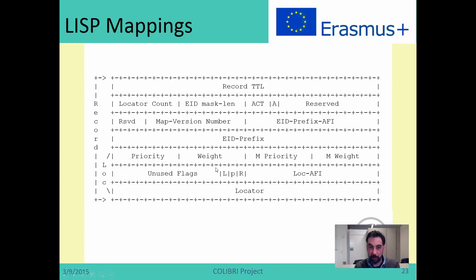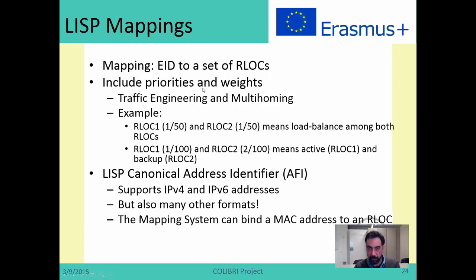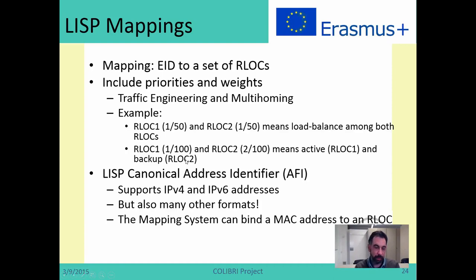The mapping includes the EID prefix and then the set of locators — the locators that are bound to this EID. For each locator you can specify the priority and the weight, for traffic engineering purposes. Finally, you have the locator itself, which is the IP address of the router. For traffic engineering: stating priority 1, weight 50 / priority 1, weight 50 means both locators have the same priority and you want half the traffic on each — this is load balancing. Or you can define priority 1, weight 100 / priority 2, weight 100, meaning you have an active link and if it fails, use the second one as a backup — a very common policy in ISPs.